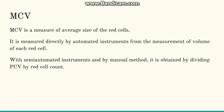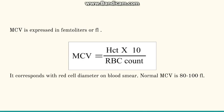Now going to each one, firstly MCV. MCV gives us the measure of average size and volume of RBC. RBC indices can be measured by automated instruments, semi-automated instruments, or by manual method. The manual method for calculation of MCV is: we divide the hematocrit, i.e. the packed cell volume, by the RBC count. The unit used is femtolitres. It corresponds to the red cell volume or red cell diameter on the blood smear. The normal MCV ranges between 80 to 100 femtolitres.